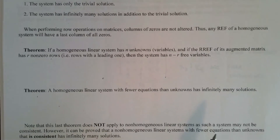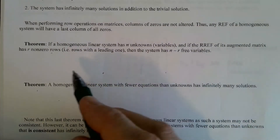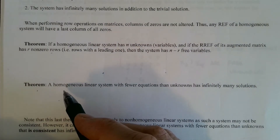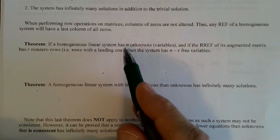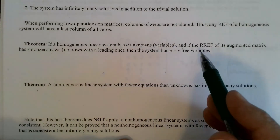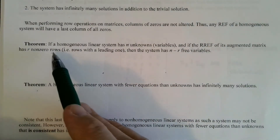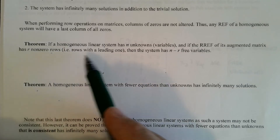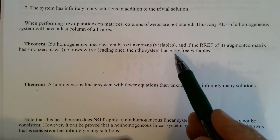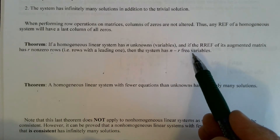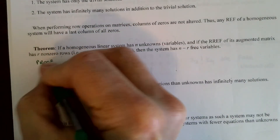I want to close with a couple of theorems relating to homogeneous linear systems. The first one will help us with the second one, which is probably more important. The first theorem: if we have a homogeneous linear system with n unknowns, and if the reduced row echelon form of its augmented matrix has r non-zero rows — remember, non-zero rows are just rows with a leading one — then the system has n minus r free variables.